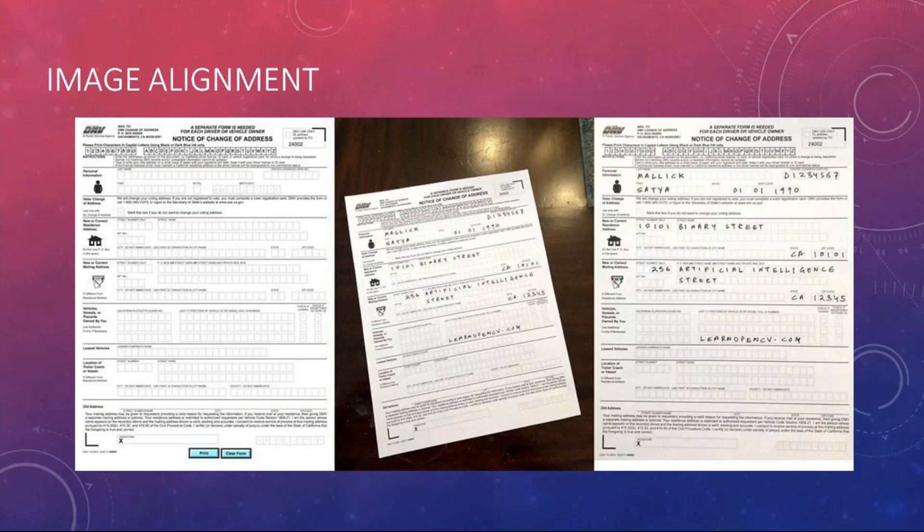One key application of feature detection is image alignment, commonly used in mobile apps that scan documents. The app correctly identifies the paper's edges and understands the angle of alignment, then realigns the image so that it looks like a properly scanned page. This is done more through OpenCV functions than deep learning models.